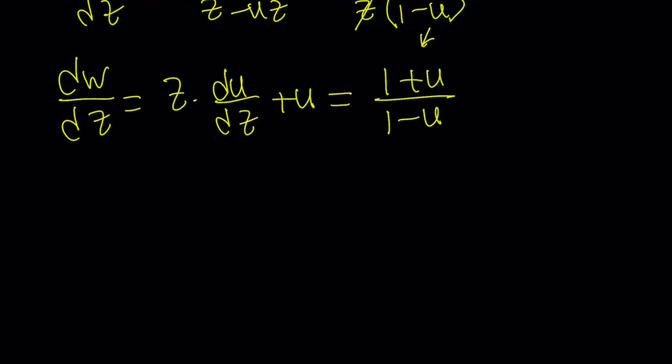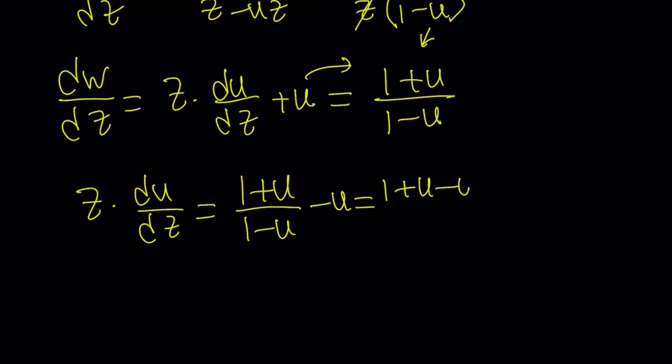Now, I have a u here. Uh-oh, that kind of bugs me. Let me clean it up. So, we have a u here. Let's go ahead and transfer it to the other side so that we can get a nicer expression. And guess what? It's going to be real cool. So, we're going to subtract u from this, and that's going to give me 1 plus u minus u plus u squared divided by 1 minus u. u cancels out, and we end up with 1 plus u squared divided by 1 minus u. That is the expression for z times du over dz.